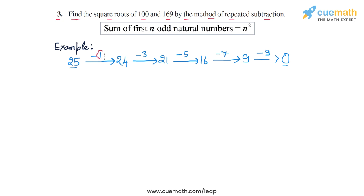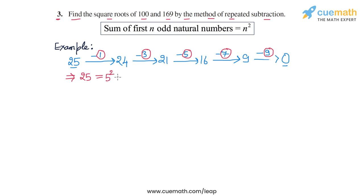Those numbers were 1, 3, 5, 7, and 9. We subtracted these 5 odd natural numbers from 25, and this means that 25 is the sum of the first 5 odd natural numbers. Hence, 25 is equal to 5 squared, and from here we can conclude that the square root of 25 is equal to 5.